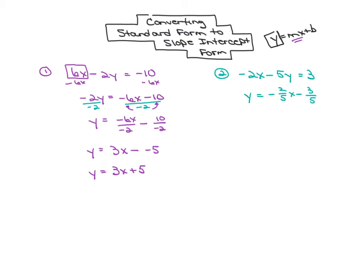Again, I want to isolate y. So my first task is to undo this entire term, negative 2x. I want to turn that negative 2x into 0. So I'm going to add 2x to both sides. And I'm left with negative 5y equals 2x plus 3.